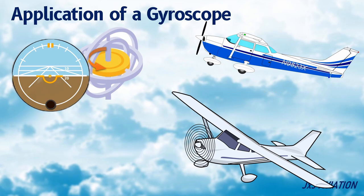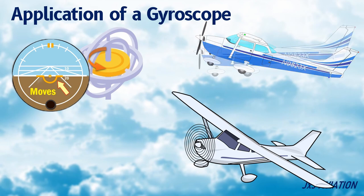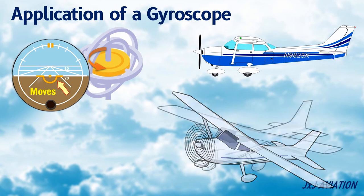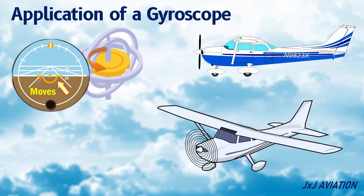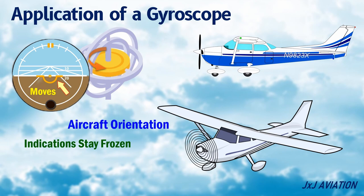The aircraft symbol is fixed on the frame which moves along with the aircraft. So when there is a change in an aircraft's pitch or bank, the aircraft symbol will move but the indications stay frozen to their original attitude. The aircraft's orientation with reference to the horizon and the pitch and bank angles are determined based on the indications.